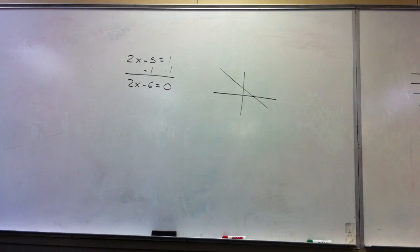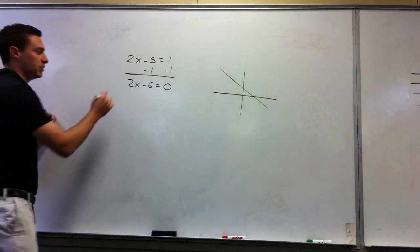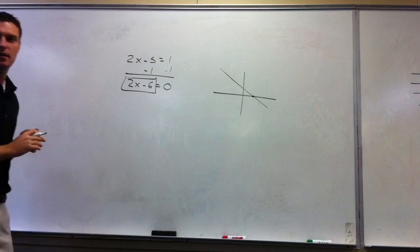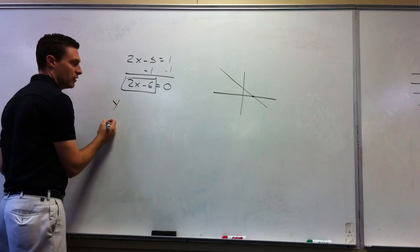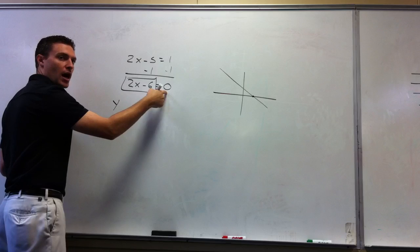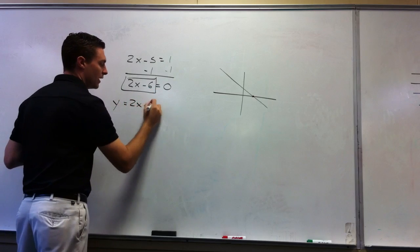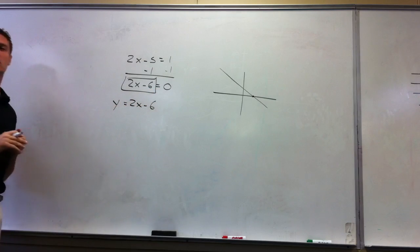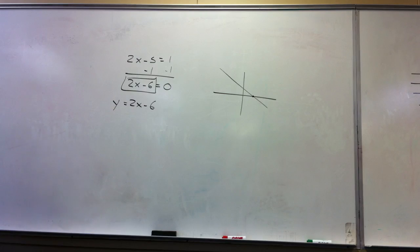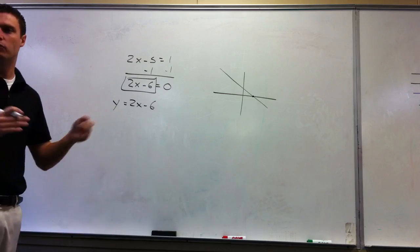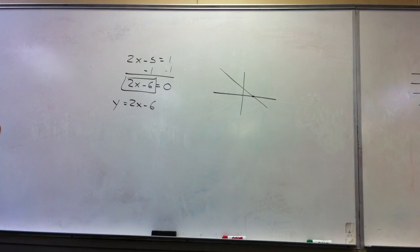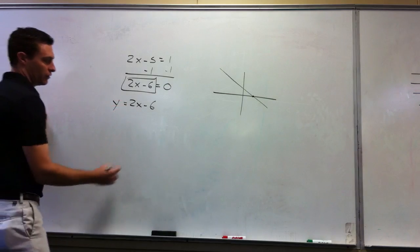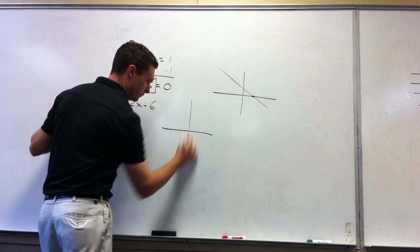Step 2: write the related function, y equals ax plus b. We take this equation and replace 0 with y: y equals 2x minus 6. What form is this? This is slope-intercept form, y equals mx plus b. Step 3: graph this equation. If we were to graph this, what would I do?